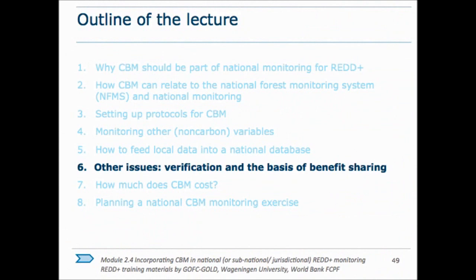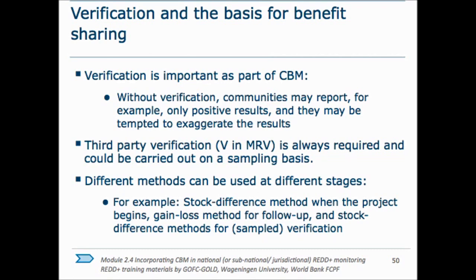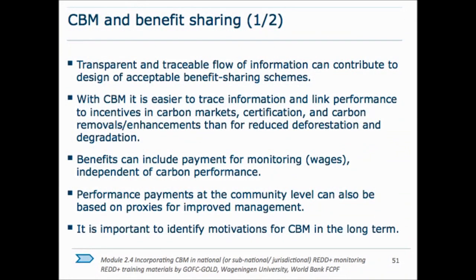It is necessary to verify community-provided information to prevent conflict of interest. However, if communities understand that accurate data benefits them first — giving better information for local management — they are very unlikely to falsify it. Data traceable to communities also enables transparent benefit distribution schemes. It is important to identify topics of main interest for communities — for instance, conservation of a water spring or concern about an invasive species in their forest.